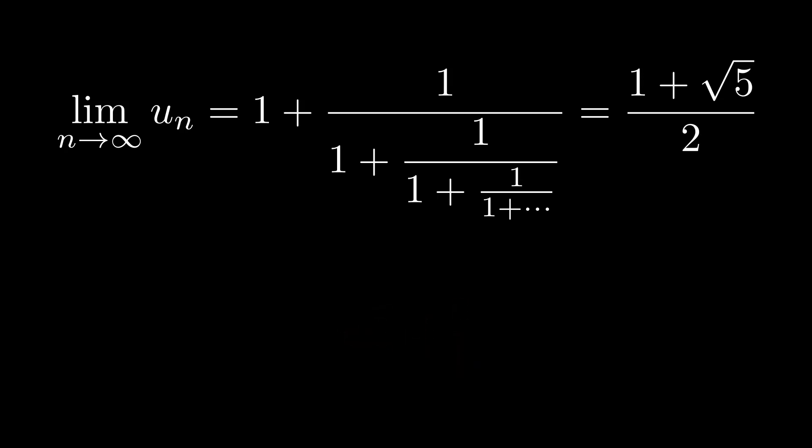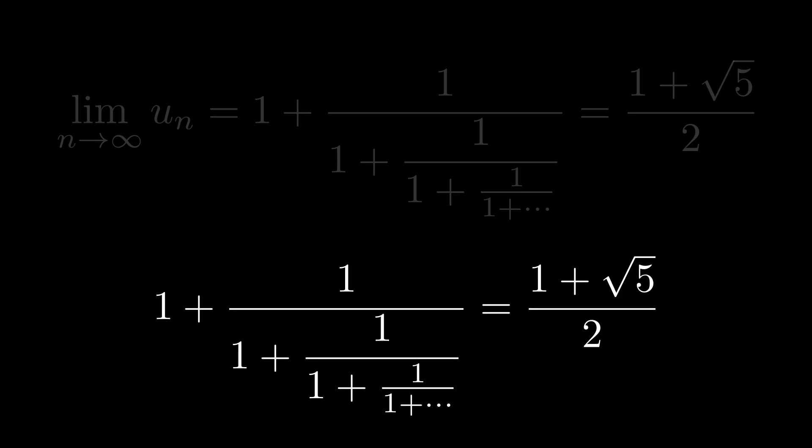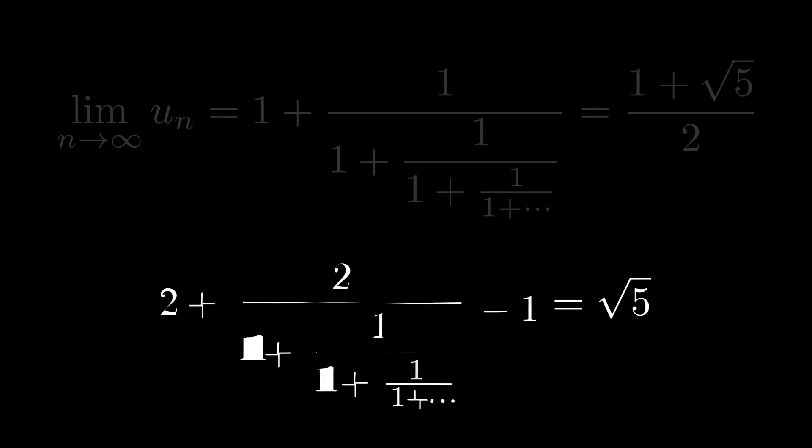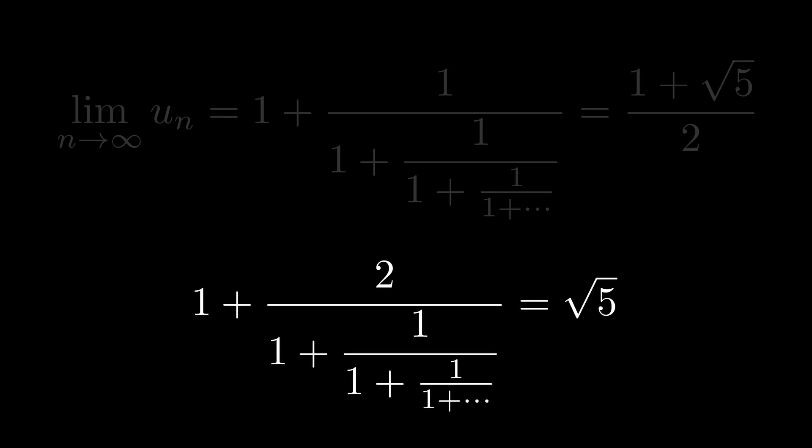Something you may have figured out, however, is that we can easily rearrange our fraction to solve for the square root of 5. By multiplying both sides by 2, and then subtracting 1, and then simplifying, we have an exact approximation for the square root of 5.